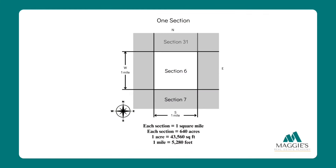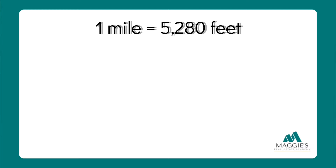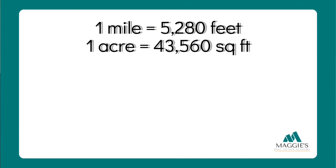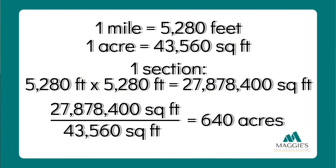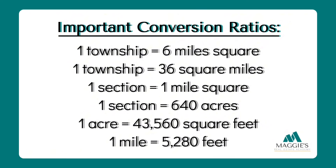Each section within a township measures one mile by one mile, or one square mile, which equals 640 acres. Here's the math: one mile equals 5,280 feet, and one acre equals 43,560 square feet. So one section is 5,280 feet × 5,280 feet = 27,878,400 square feet. Divide that by 43,560 square feet and you get 640 acres — that magic number from real estate school. These conversion ratios are important to memorize for calculations you may see on your real estate exam.